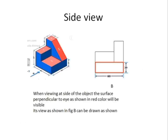Then the side view. When looking from the right, the red colored surface will be visible to the eye. That surface is to be drawn as shown in the figure — that is the orthographic view of the side view.